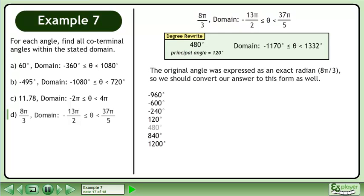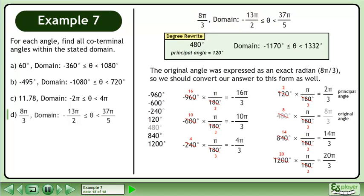The original angle was expressed as an exact radian, 8pi over 3, so we should convert our answer to this form as well. Convert each degree to an exact value radian using the conversion multiplier pi over 180 degrees. This is our final answer.